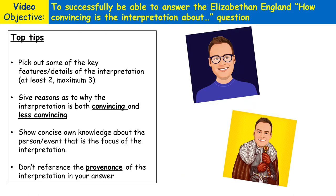First of all, you need to pick out some of the key features or details of the interpretation. The interpretation might take the form of a written interpretation or it could be a picture. If it's a written interpretation, you need to pick out two or three details or features. If it's a picture, cartoon, or drawing interpretation, it needs to be the main features of the drawing. That's what you need to be picking out initially.